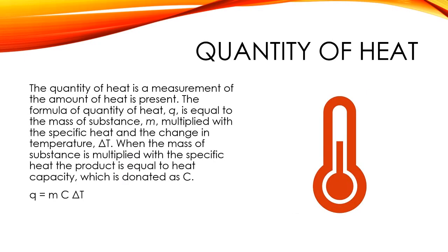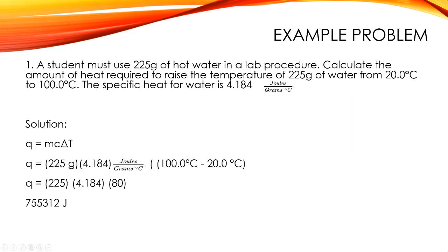That is often used in an equation called quantity of heat. Q equals MC delta T is the equation. Q is the amount of heat, the quantity of heat that is present. And Q is going to be equal to the mass of the substance times the specific heat times the change in temperature I want. So Q equals MC delta T.